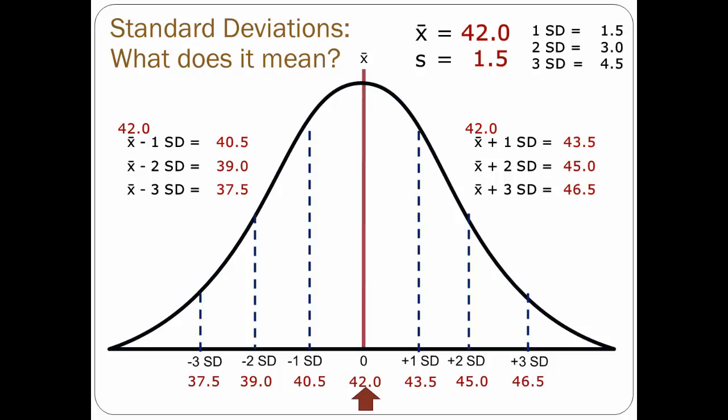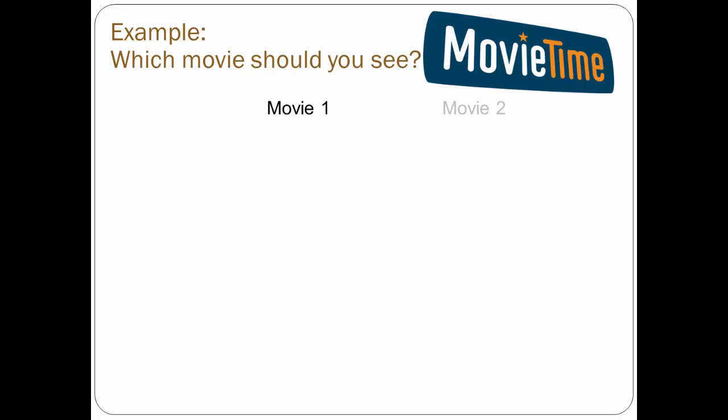This, then, is the value of standard deviation. Let's add an example to make all this more relevant. Let's say you are considering going to a movie and are split between two possibilities. 30 of your friends have seen both movies, so you ask them to rate each on a scale of 1 to 10. Knowing what you do about measures of central tendency, you calculate a mean for both movies — and the mean is the same at 7.33. Kind of hard to make a decision based solely on the mean.